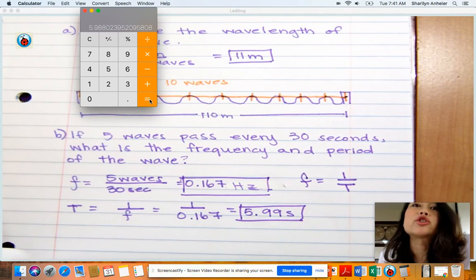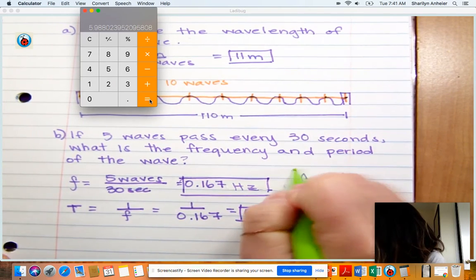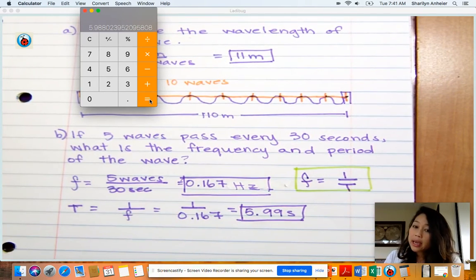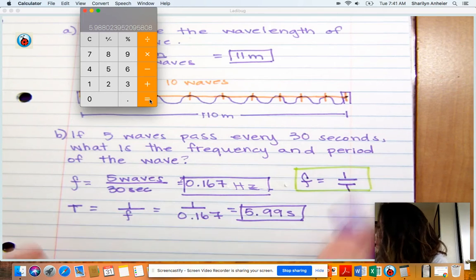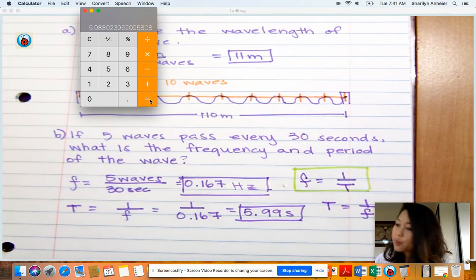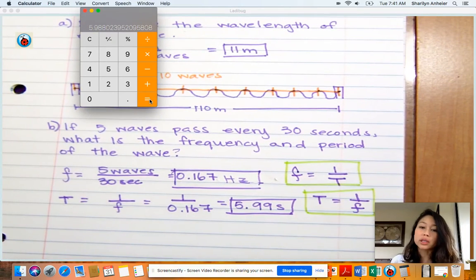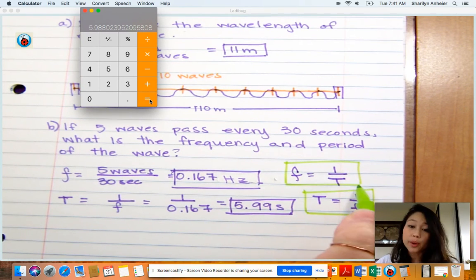So basically, here's your equation. They can be reversed depending on what you're solving for. They are essentially reciprocals of each other. You are only given this one in your physics helper, but you should know how to convert it to solve for period if you have the frequency.